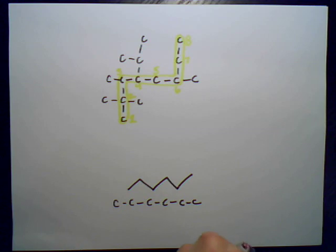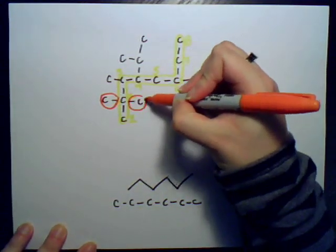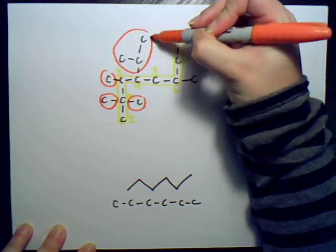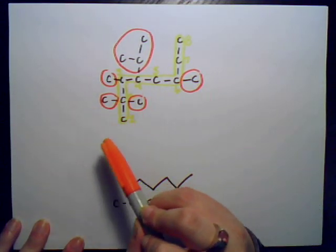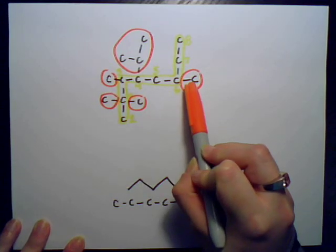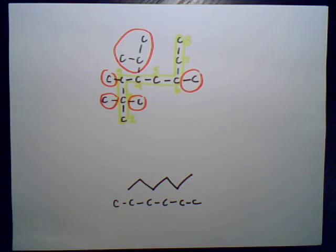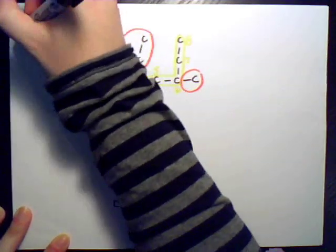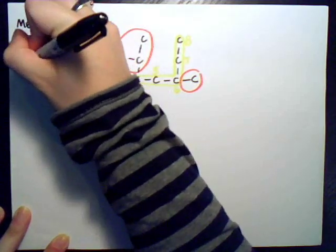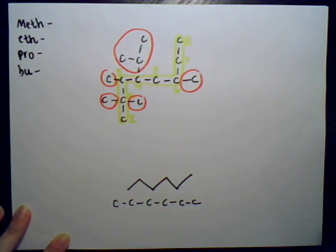Now we're going to circle the substituents: we have one here, one here, one there, one there, and one there. One carbon is attached to the chain here, and here there are three carbons. Remembering what I mentioned in my previous video — we use meth, eth, prop, but to remember one, two, three, or four carbons.